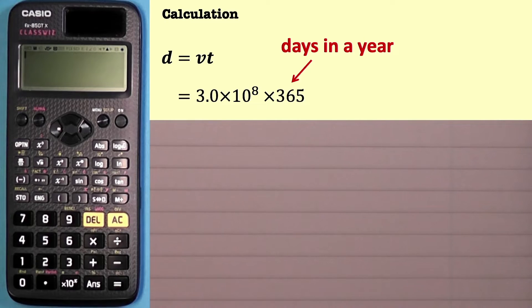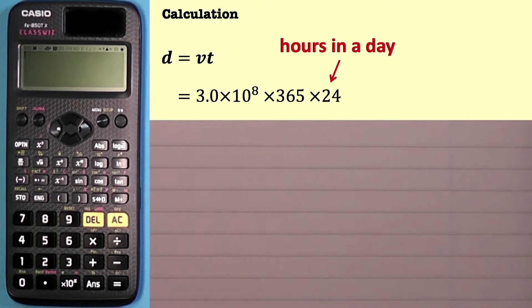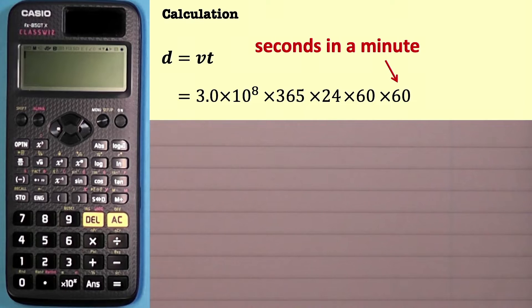You could write this as 365.25 — the 0.25 or quarter comes from the fact that every four years we get an extra day in February, that's a leap year. However, when you round the final value you end up with basically the same number, so you don't need to include that 0.25. We then multiply by 24 hours in a day, by 60 minutes in an hour, and by 60 seconds in a minute.